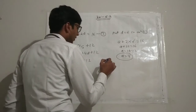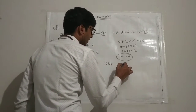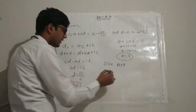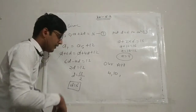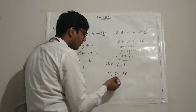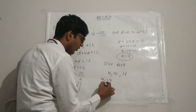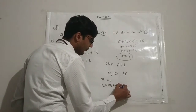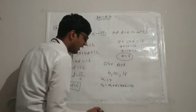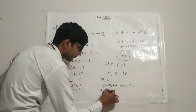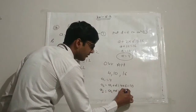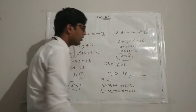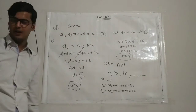The AP is: A1 equals 4, A2 equals 4 plus 6 equals 10, A3 equals 10 plus 6 equals 16, and so on. So the required AP is 4, 10, 16, and so on.